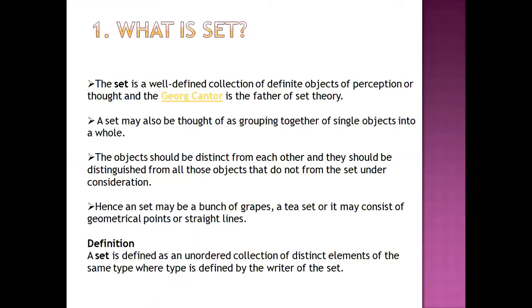We can consider them in a class called 'fruit' — we can group the objects into a single one and recall it as fruit. So fruit will be a set. The definition says: a set is a well-defined collection of definite objects of perception or thought. George Cantor was said to be the father of set theory — he was a mathematician. A set may also be thought of as a grouping together of single objects into a whole.